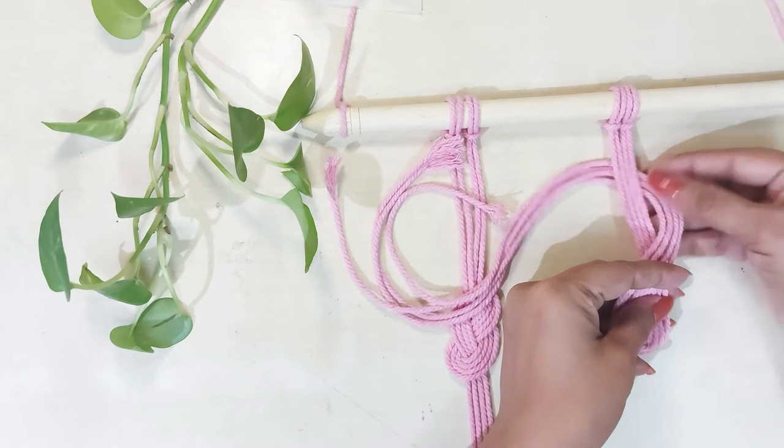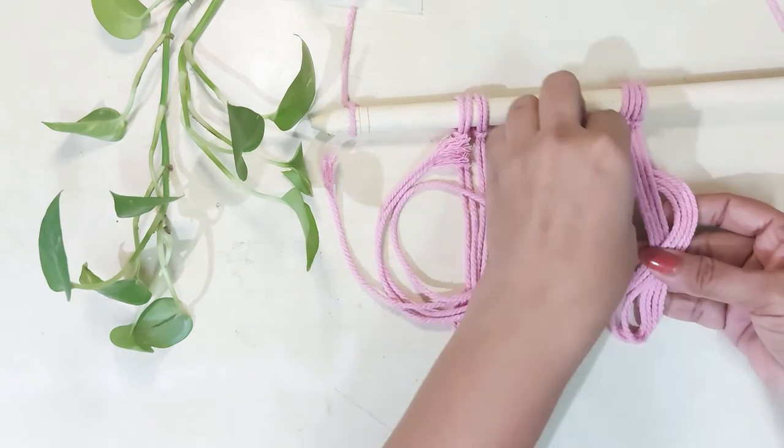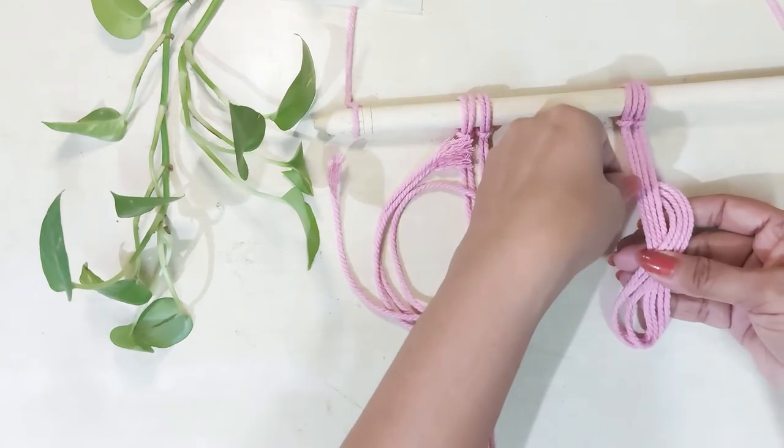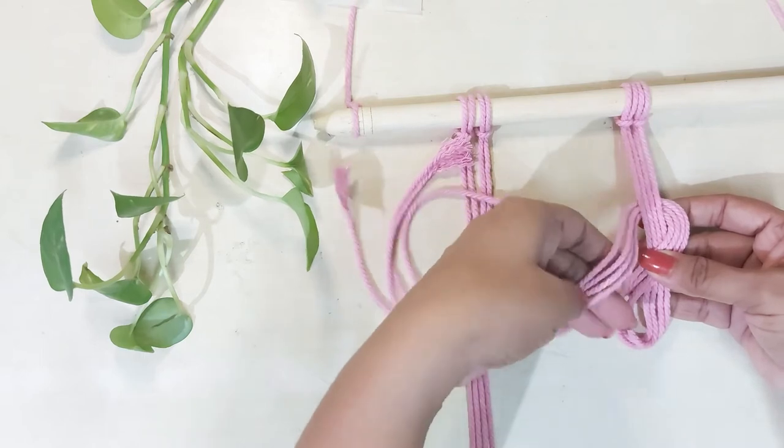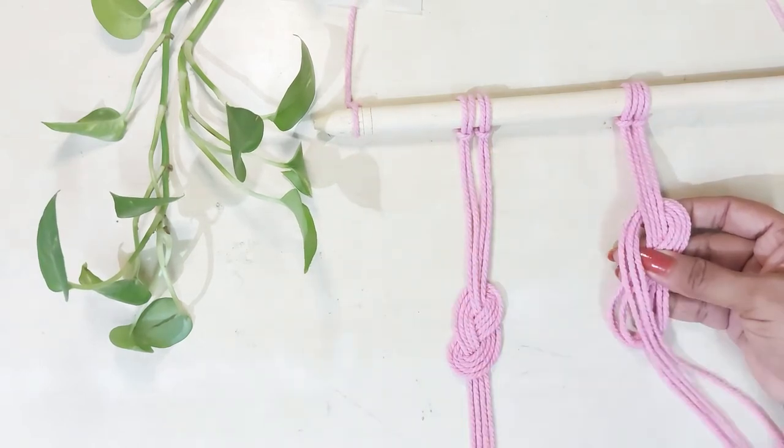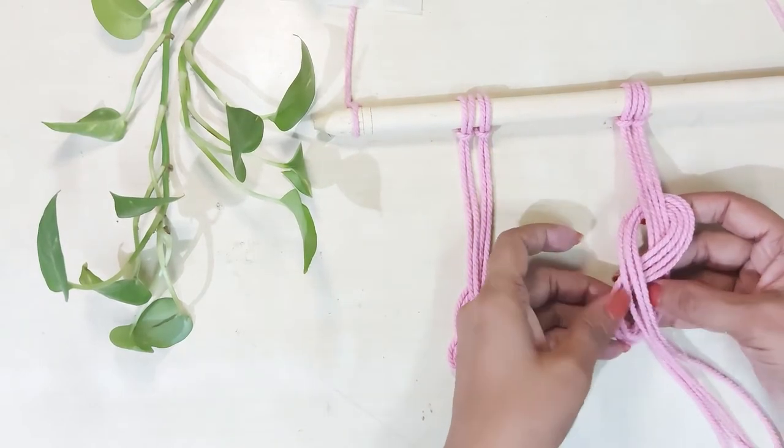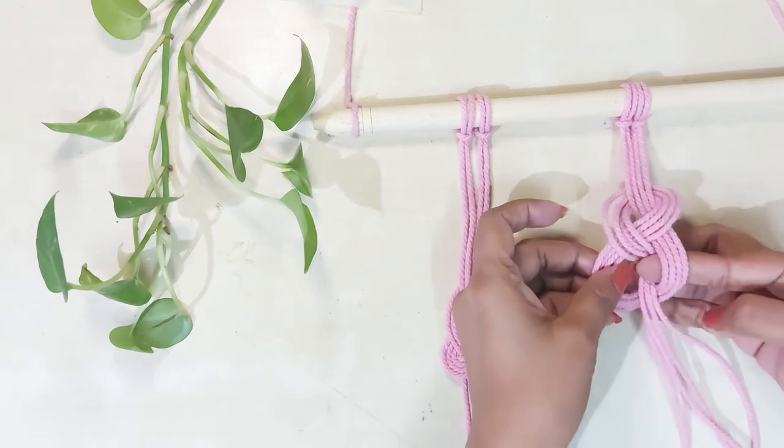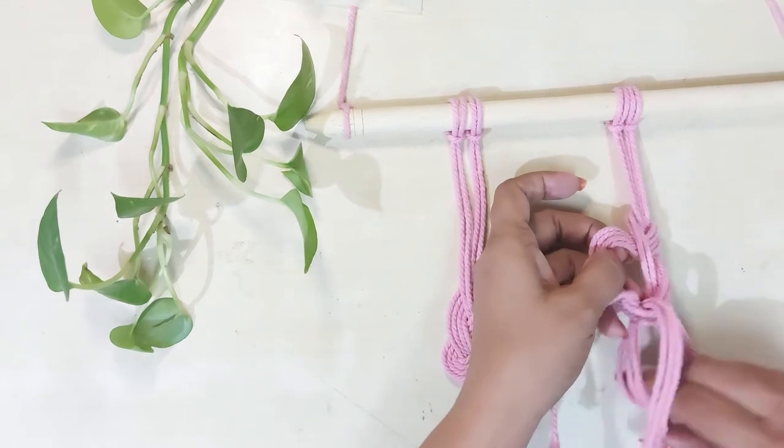If you are using a thick string, then you can do the sailor's knot using just two strings. Now pass all the strings from this loop and pull it down gently.